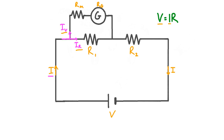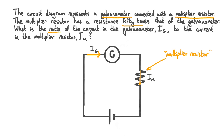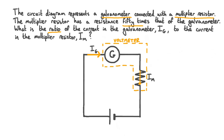Now that we've seen how a voltmeter is designed and used, let's try answering a practice question. The circuit diagram represents a galvanometer connected with a multiplier resistor. The multiplier resistor has a resistance 50 times that of the galvanometer. What is the ratio of the current in the galvanometer Ig to the current in the multiplier resistor Im? In this question we've been given a circuit diagram showing a galvanometer and a multiplier resistor connected in series with a cell. The term multiplier resistor describes a resistor used in the construction of a voltmeter — specifically, a resistor connected in series with a galvanometer, as is the case in this circuit. This combination creates a voltmeter.